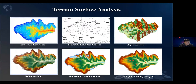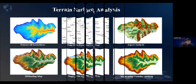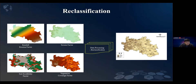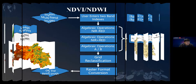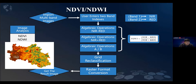Surface analysis functions are also provided, such as extracting isosurfaces, 3D shading maps, single-point and multi-point visibility analysis, and aspect analysis. Reclassification is also an important function in image data processing. The NDVI and NDWI are commonly used indices based on remote sensing image analysis. According to these parameters, we can determine the nitrogen demand of crops in different seasons, playing an important guiding role in the rational application of nitrogen fertilizer.